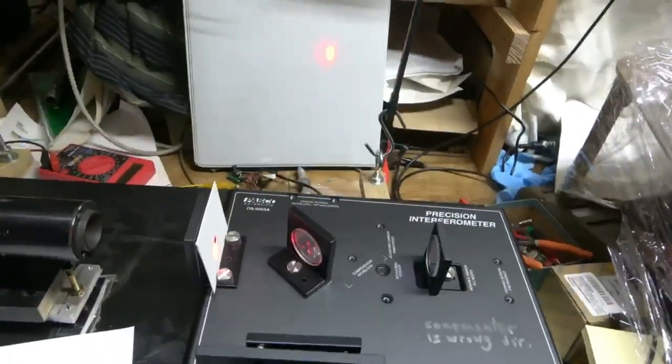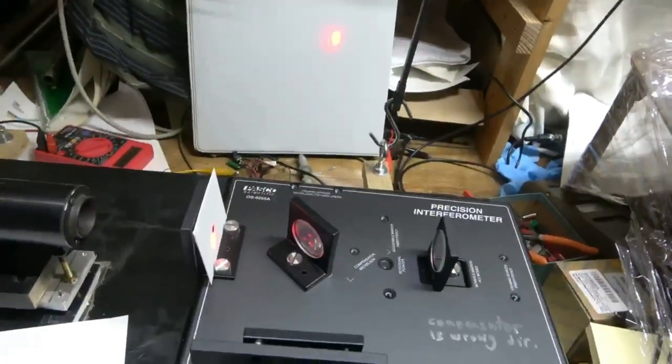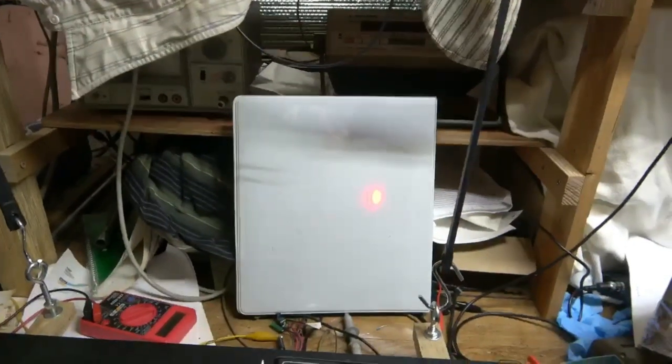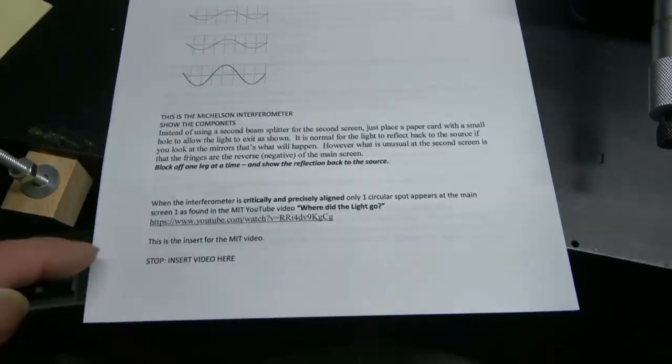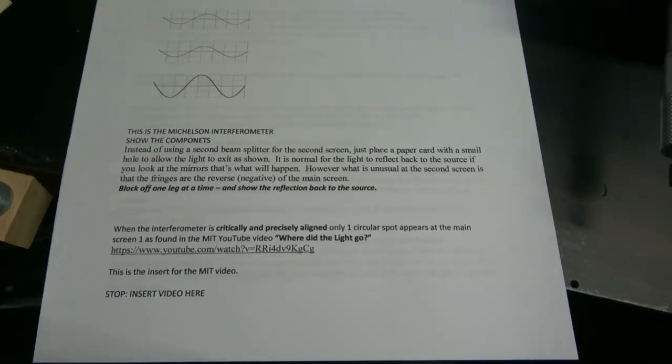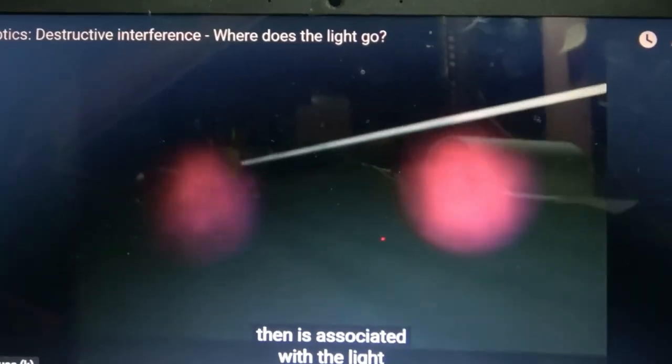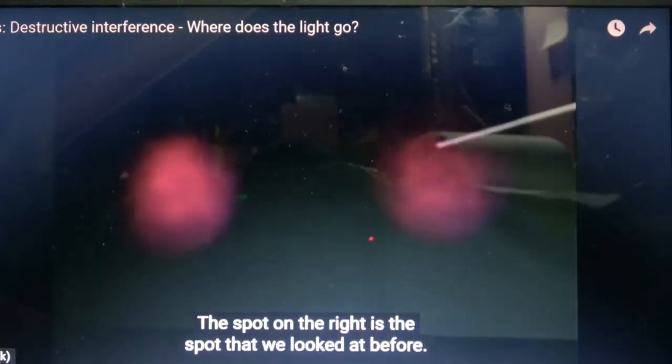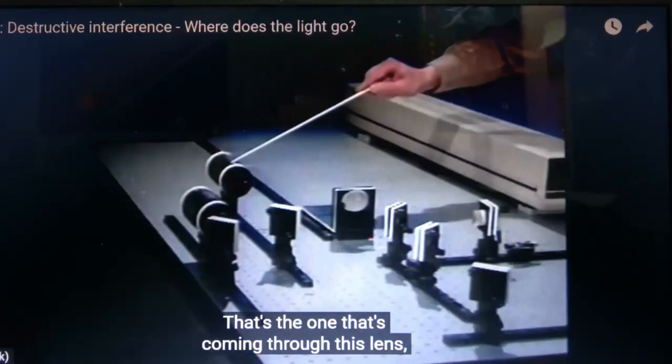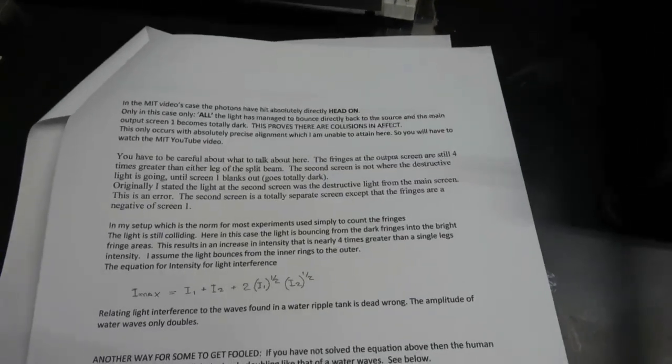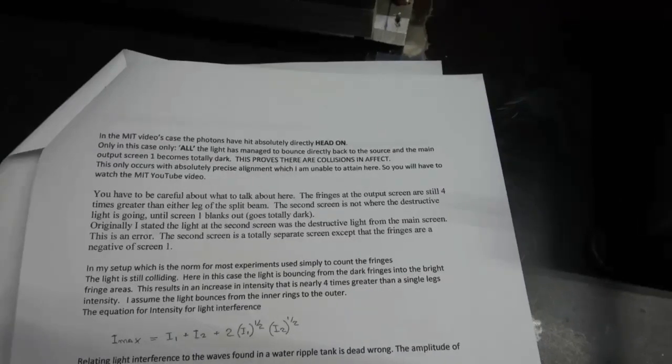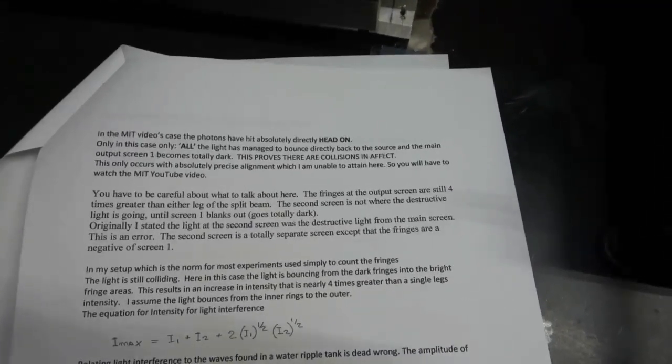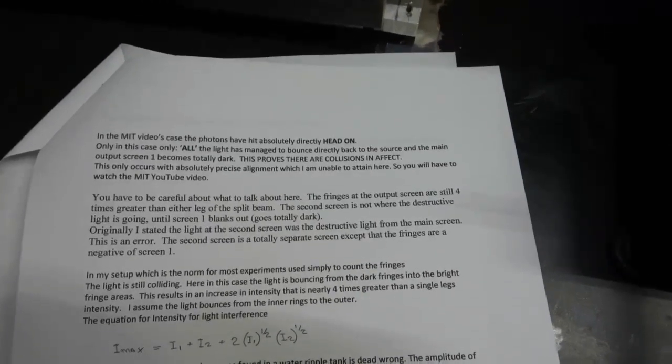When the interferometer is critically aligned with only one circular spot appearing at the main screen, as found in the MIT video, where did the light go? Here's the reference for it. I'm gonna insert the video in here now. The left on the screen then is associated with the light that's returning to the source. The spot on the right is the spot that we looked at before. That's the one that's coming through this lens. In the MIT video's case, the photons have hit absolutely directly head-on. Only in this case, all the light has managed to bounce directly back to the source, and the main output screen becomes totally dark.